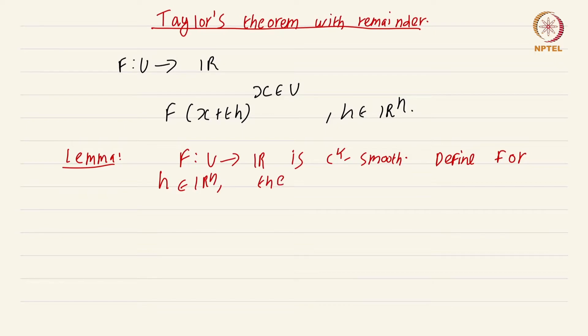This is a function from u to r defined by h dot delta of f at the point x is nothing but h_1 d_1 f(x) plus dot dot dot h_n d_n f(x).